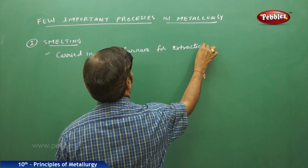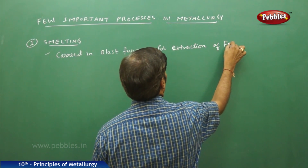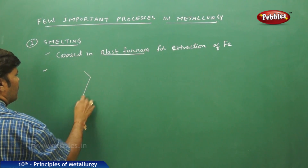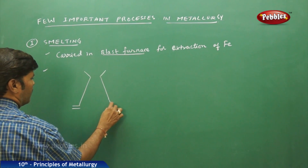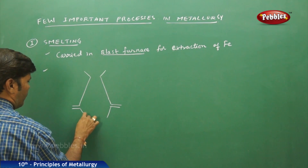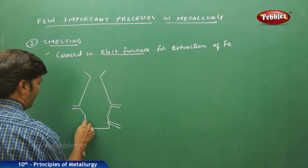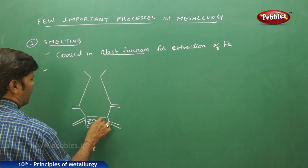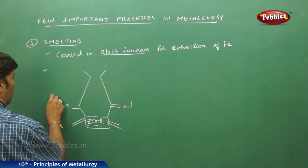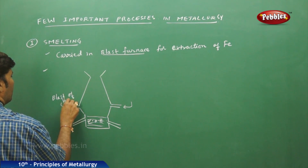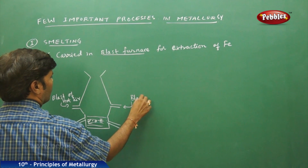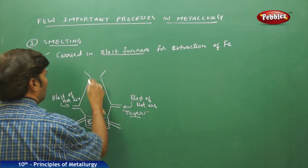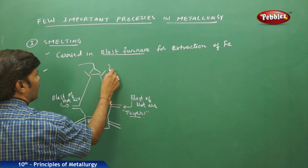The blast furnace contains a blast of hot air. There is a zone of earth and blasts of hot air at different points. This chamber is also called the tuyeres chamber, and there is a hopper with a cup-cone arrangement at the top.